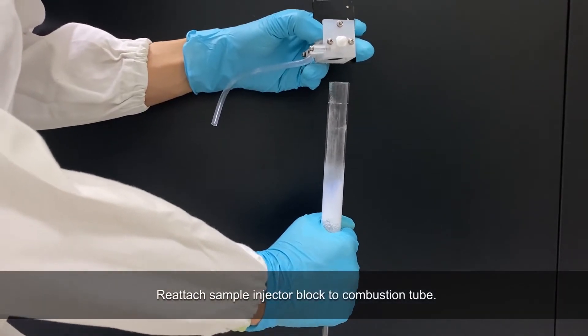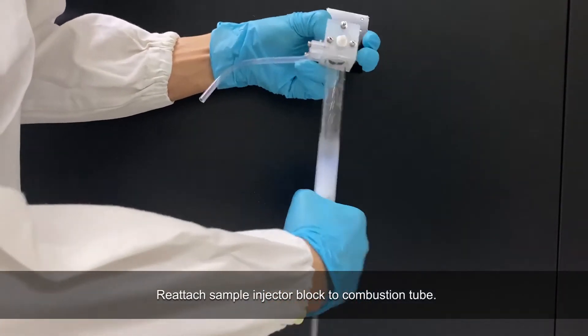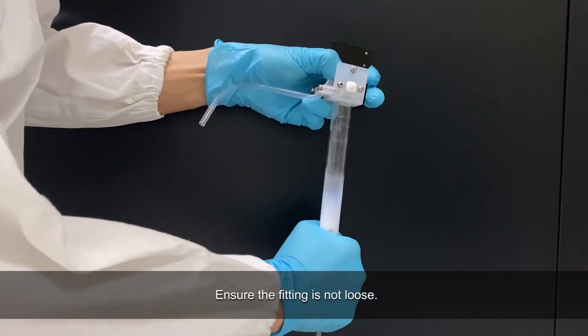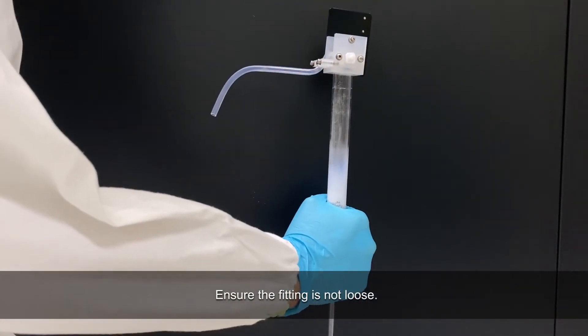Reattach the sample injector block to the combustion tube. Ensure the fitting is not loose before proceeding.